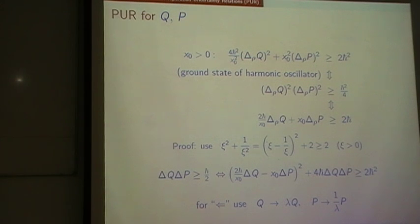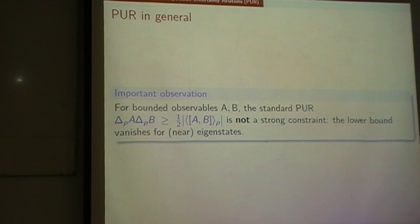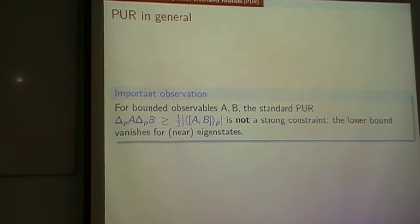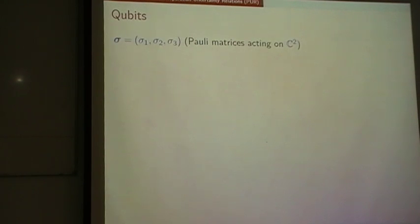I'm not going to do position and momentum for you here, but focus on qubits. There's first of all this important observation for bounded observables: the standard uncertainty relation in terms of products of variances or standard deviations isn't very strong — it's not a tight constraint. The lower bound vanishes from the eigenstates, so we have no real positive limit for delta A times delta B.